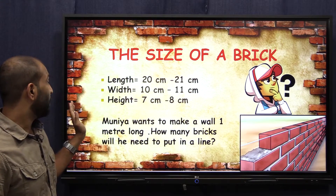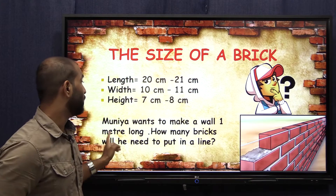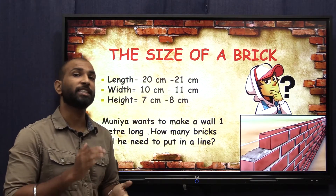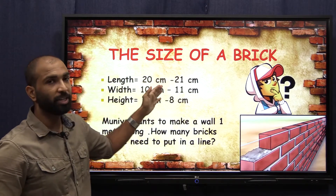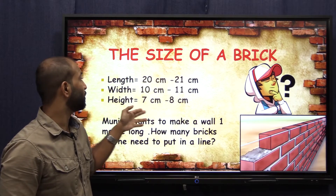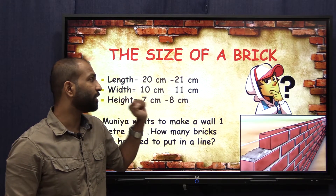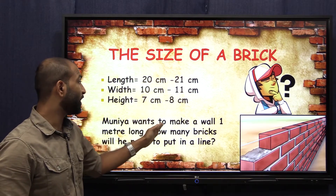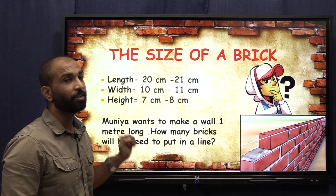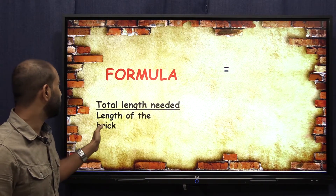We have a question about the size of a brick. Muniya wants to make a wall one meter long — how many bricks will he need to put in a line? For that, we have to know the size of a brick. The approximate size of a brick: its length is 20 to 21 centimeters (we can take it as 20 cm), its width is 10 to 11 centimeters, and its height is 7 to 8 centimeters. The formula is: total length needed divided by the length of the brick.